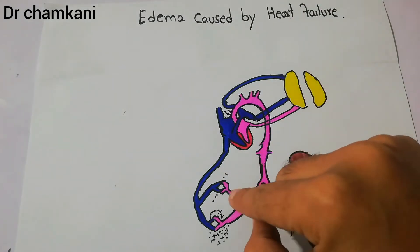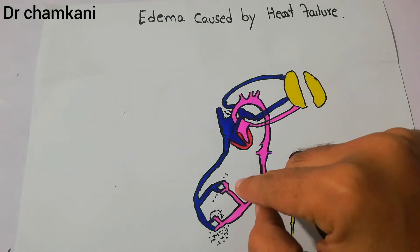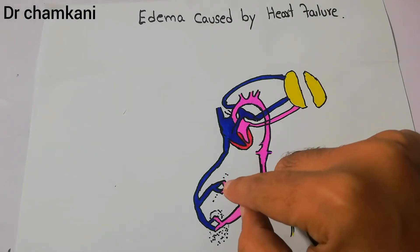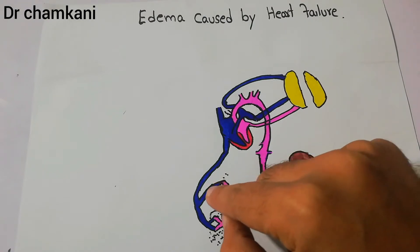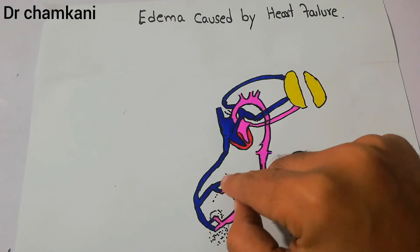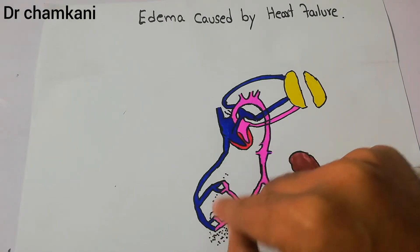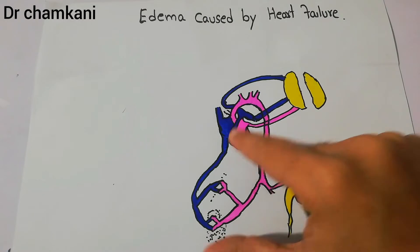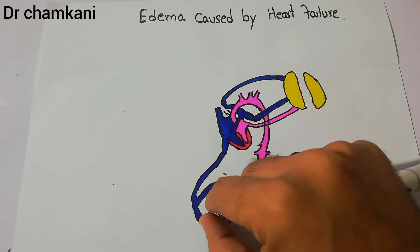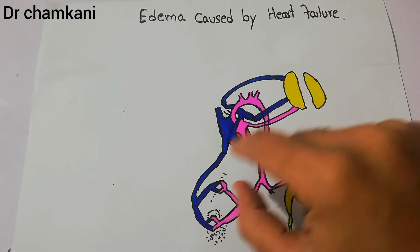Normally, a small amount of fluid oozes out at the arterial end of capillaries and then it enters back into the venous end of the capillaries. The tissues present at the capillaries utilize the different substances and then return the waste to the venous side.